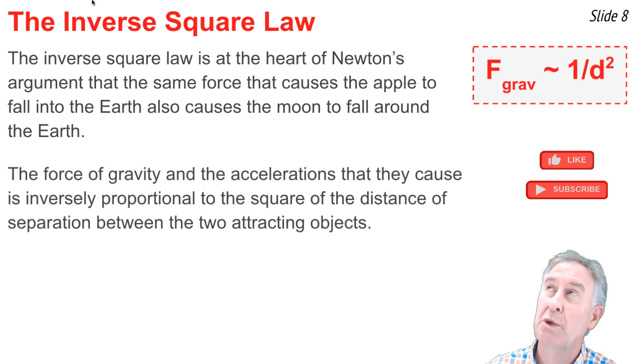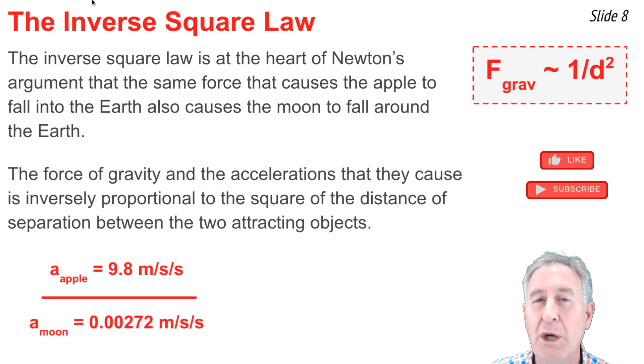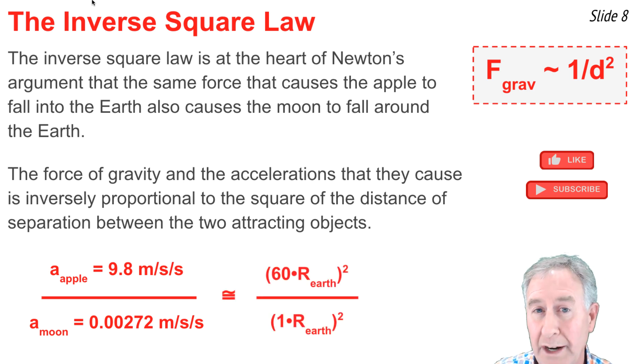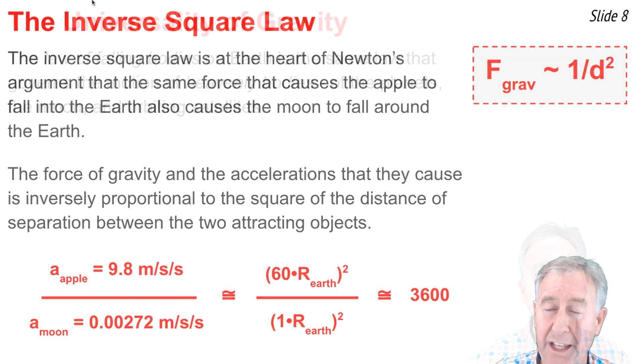The inverse square law suggests that the force of gravity and the accelerations which they cause is inversely proportional to the square of the distance between the two attracting objects. When you look at the acceleration of the apple compared to that of the moon, the ratio is 3,600 to 1. And that ratio is the inverse square of the ratio of the distances between the center of the earth and the moon and the center of the earth and the apple. 3,600 is the magic number in Newton's argument.